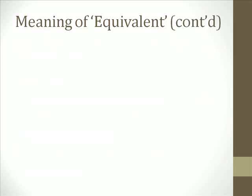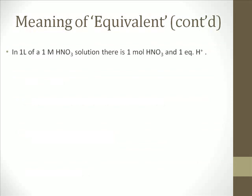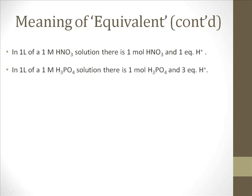Let's work through a couple of examples. If we had one liter of a one mole per liter solution of nitric acid, we would have one mole of nitric acid. We would also have one mole of reactive hydrogen ions — but because hydrogen ions are the fundamental reactive particle in the titration, we would say we have one equivalent of hydrogen ions, not one mole. For one liter of one mole per liter phosphoric acid, you have one mole of phosphoric acid, but since each phosphoric acid molecule creates three hydrogen ions, you would have three equivalents of hydrogen ions.